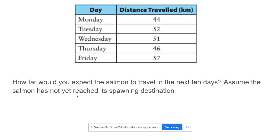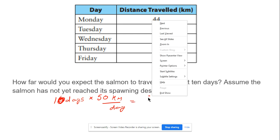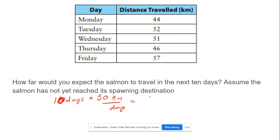Part B: How far would you expect the salmon to travel in the next 10 days, assuming they haven't reached their spawning destination? 10 days at 50 kilometers per day equals 10 times 50 equals 500 kilometers.